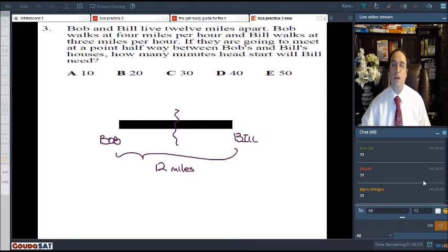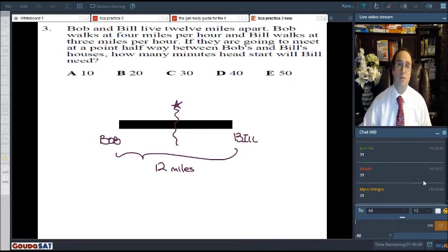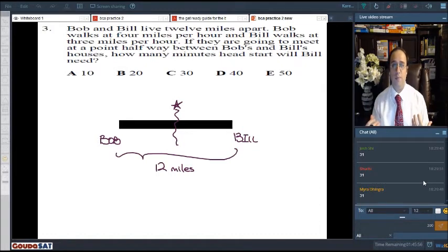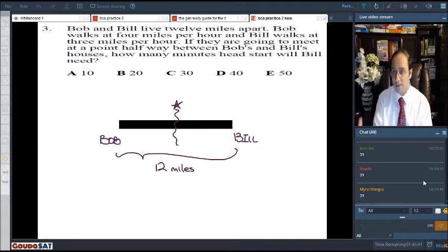If they are going to meet at a point halfway, which is right here, between Bob's and Bill's houses, how many minutes head start will Bill need? Now, an approach to word problems on the test that is always beneficial is the following. You drew the information given, but you really don't understand how to get the minutes head start that Bill needs, for example. So, one thing to do on the test would be to look at the information you have and then use the information to just get anything else and take it from there. That's if you're stuck, you don't know what to do.